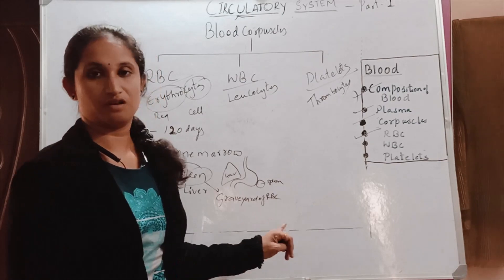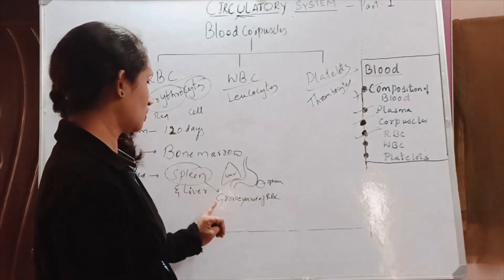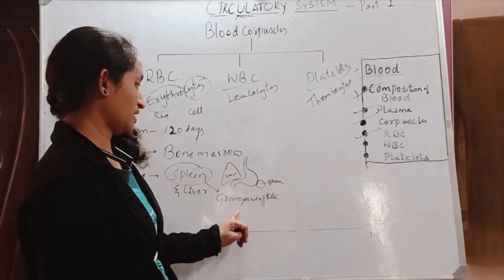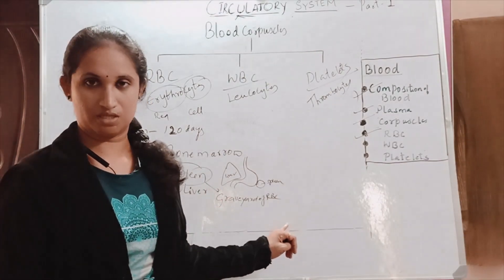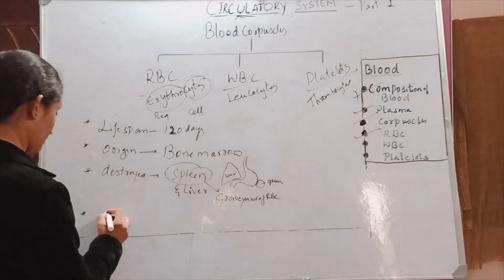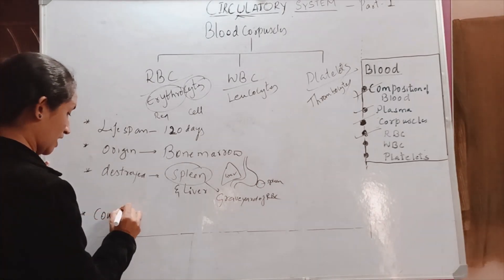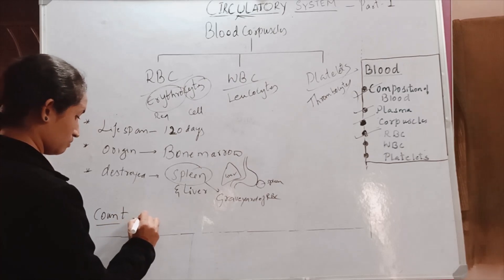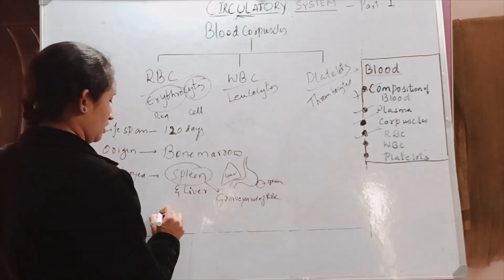So spleen is called as graveyard of RBC cells. And next we will go with count, that is number of RBC cells present in the body. In infants...